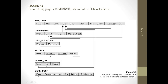Let us see each one by one. The employee table has f_name, middle name or initials, last name, SSN, birth date, address, sex, salary, supervisor's SSN, and department number. Since one employee belongs to one department — a one-to-many relationship — the department number is included as a foreign key. The supervisor's SSN again refers back to the main SSN.